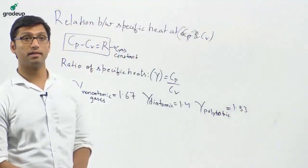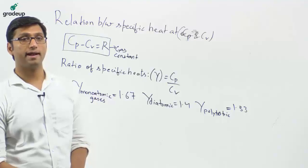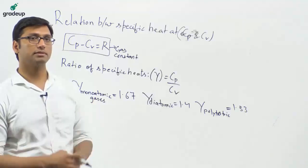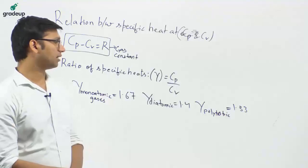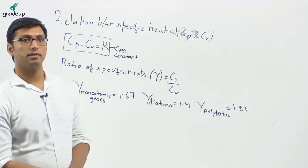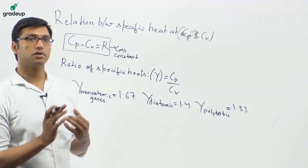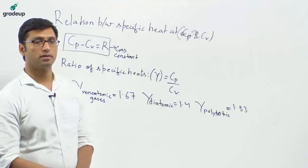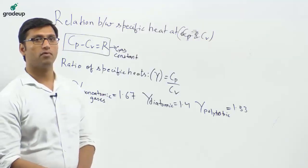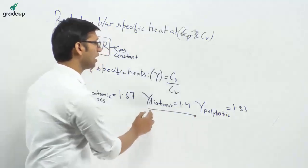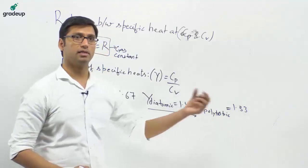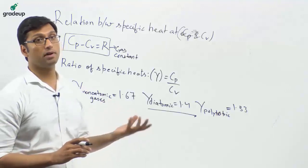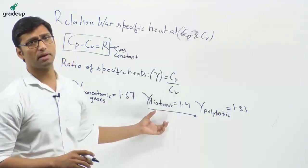Gamma is called the adiabatic index, and its value is different for different types of gases — 1.67 for monoatomic, 1.4 for diatomic, and 1.33 for polyatomic. You have to remember these values for the exam. Most of the gases are diatomic in nature, so if the value is not given in the question, take gamma as 1.4, since most gases like oxygen and nitrogen exist in diatomic state.